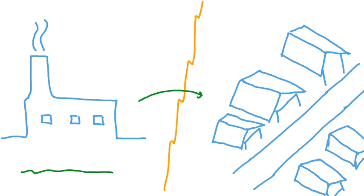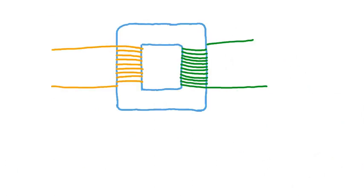That means that shortly before we use it, we'd like to be able to transform the electricity we receive from a power plant. This transformation, as we'll see, relies on electromagnetic induction. An electrical transformer looks like this.